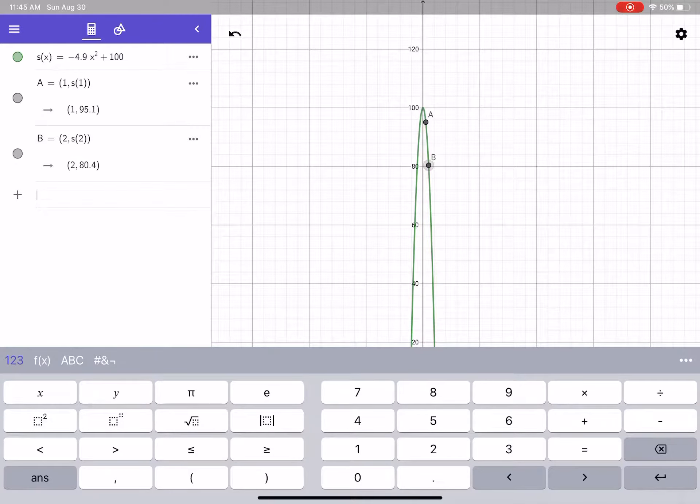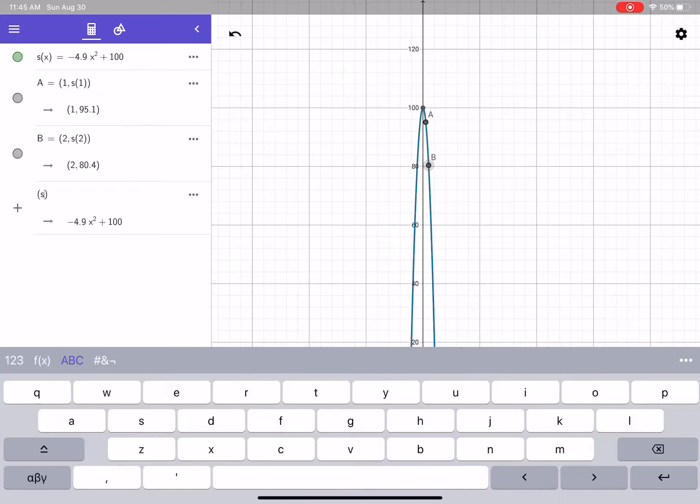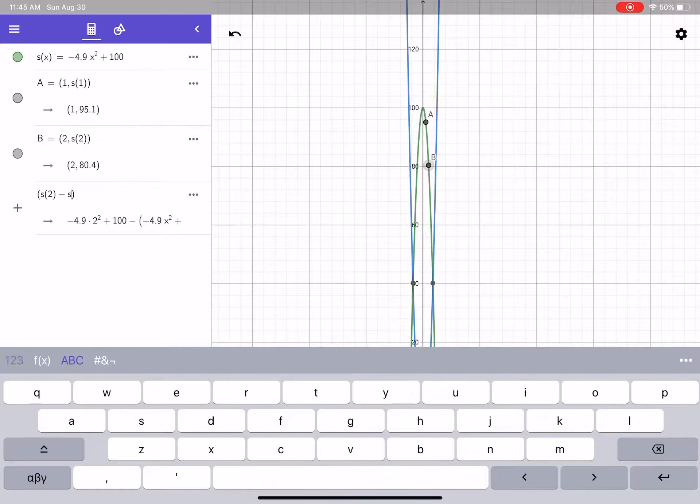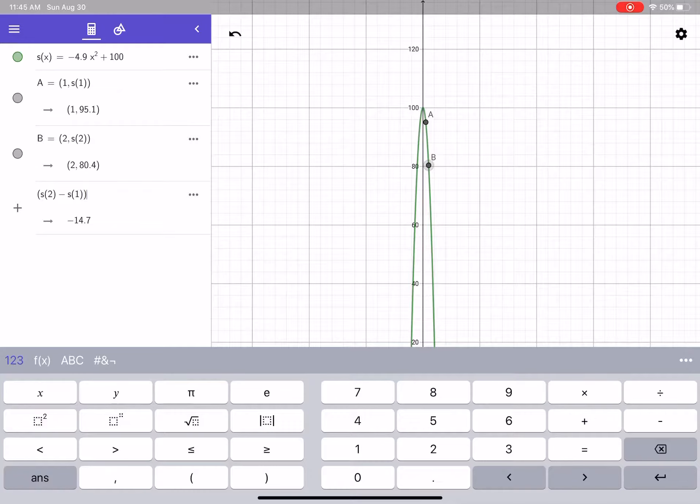I can just open up some parenthesis and we'll do our division problem here as s(2) minus s(1), and then the division sign, and then do the bottom in the same order, 2 minus 1. So we can see, we have our average velocity calculated at negative 14.7.